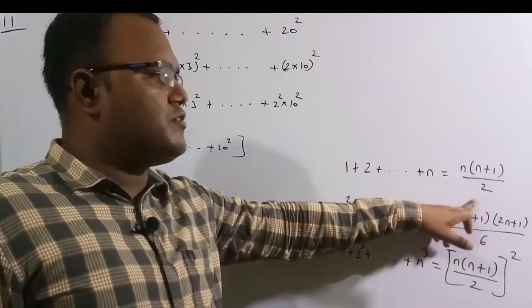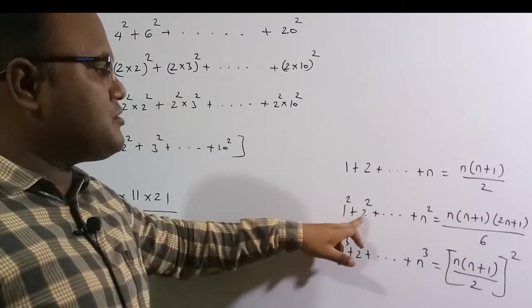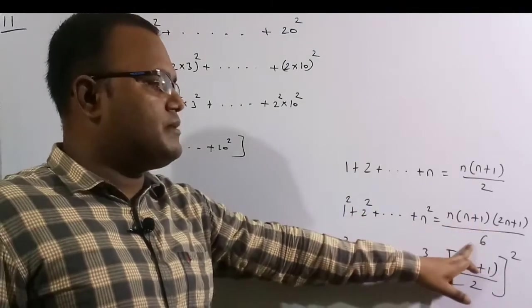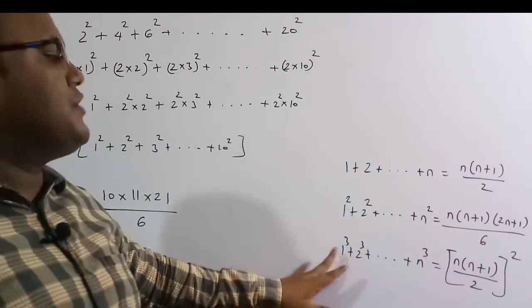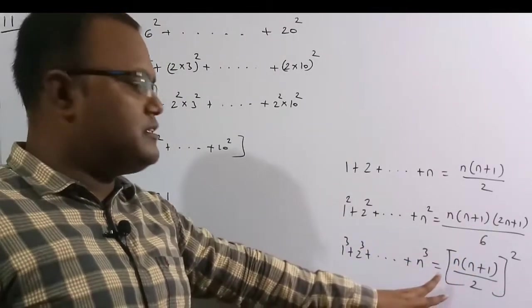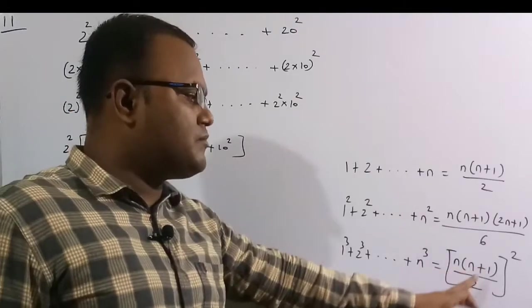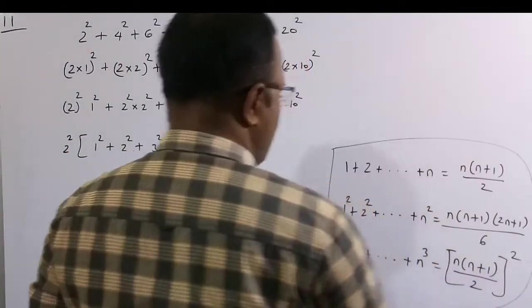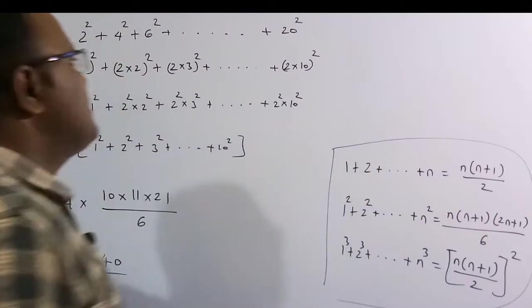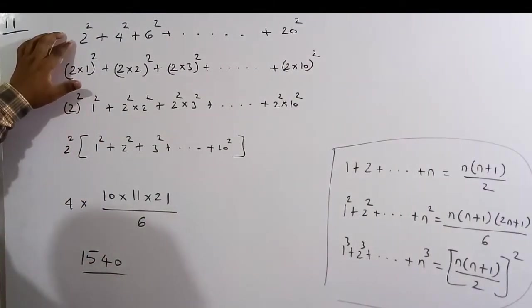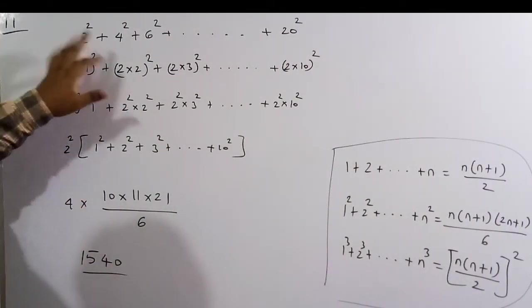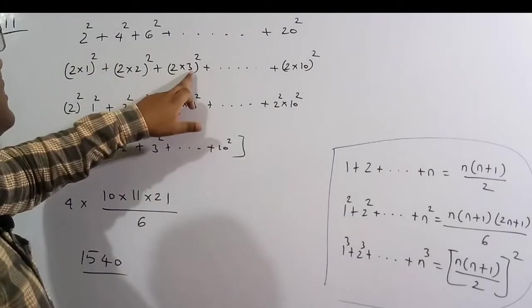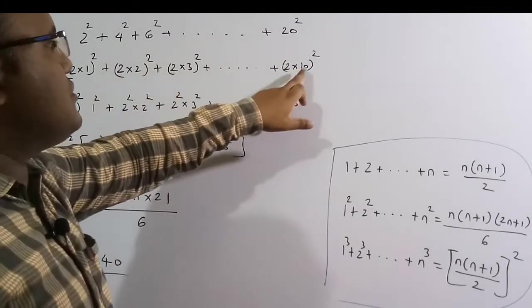For 1² + 2² + ... + n², the formula is n(n+1)(2n+1)/6. For 1³ + 2³ + ... + n³, the formula is [n(n+1)/2]². Now to solve, I can write 2² + 4² + ... + 20² as (2×1)² + (2×2)² + ... + (2×10)².